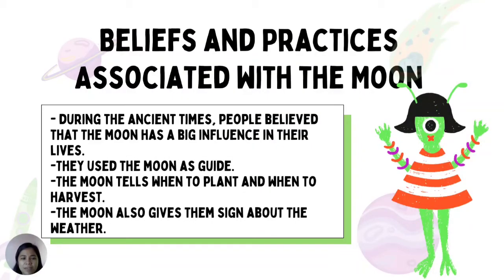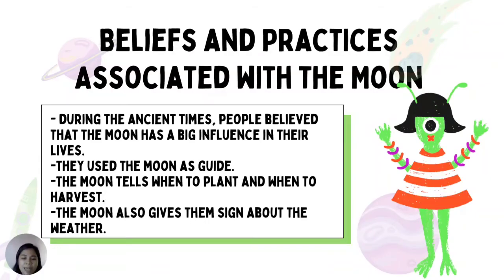Next is the beliefs and practices associated with the moon. Phases of the moon are often associated with superstitious belief. During ancient times, people believed that the moon has a big influence in their lives. They used the moon as a guide — the moon tells when to plant and when to harvest, and also gives them signs about the weather. These beliefs and practices were passed from generation to generation.